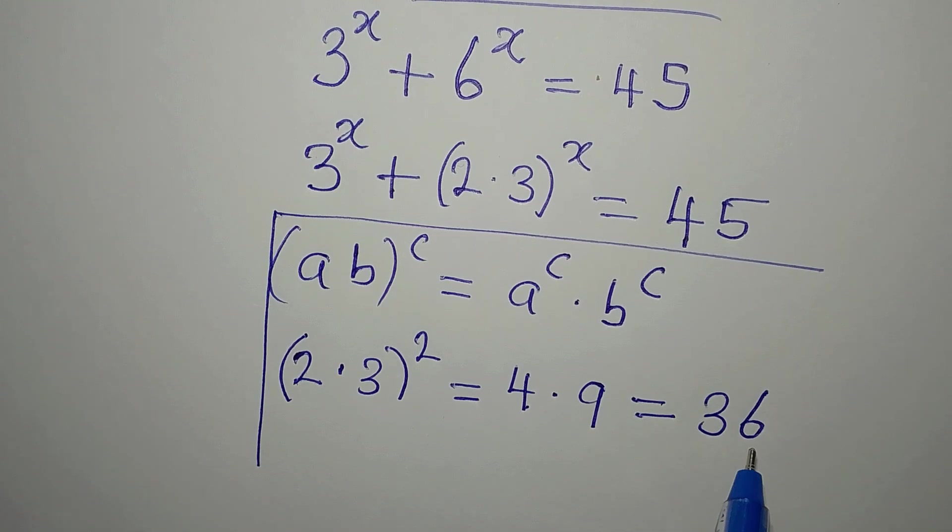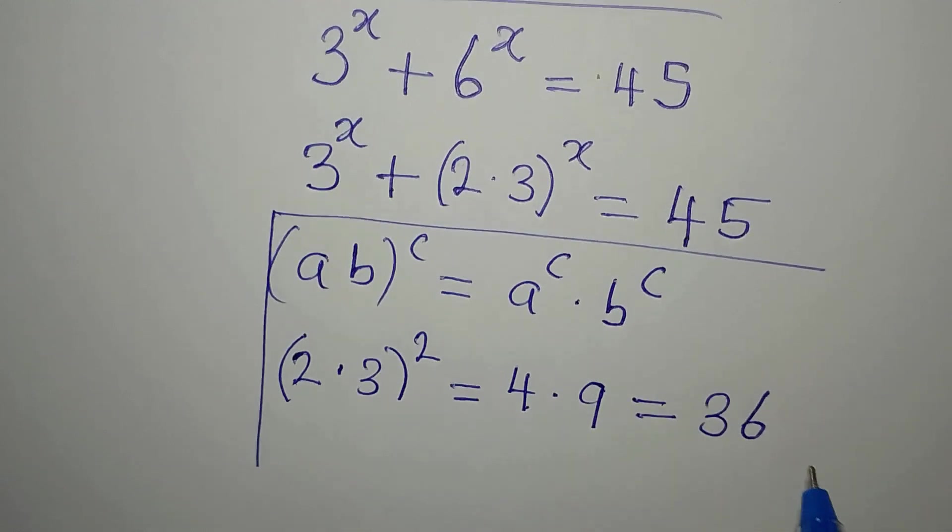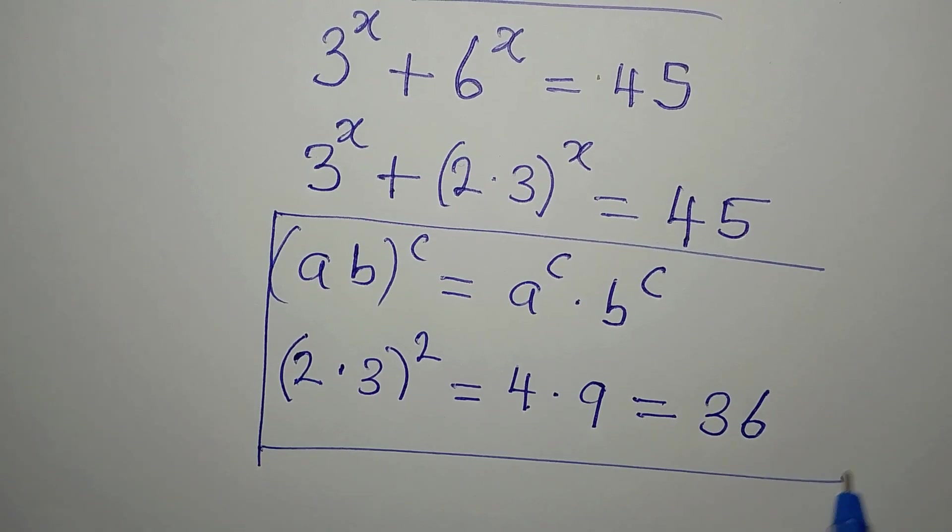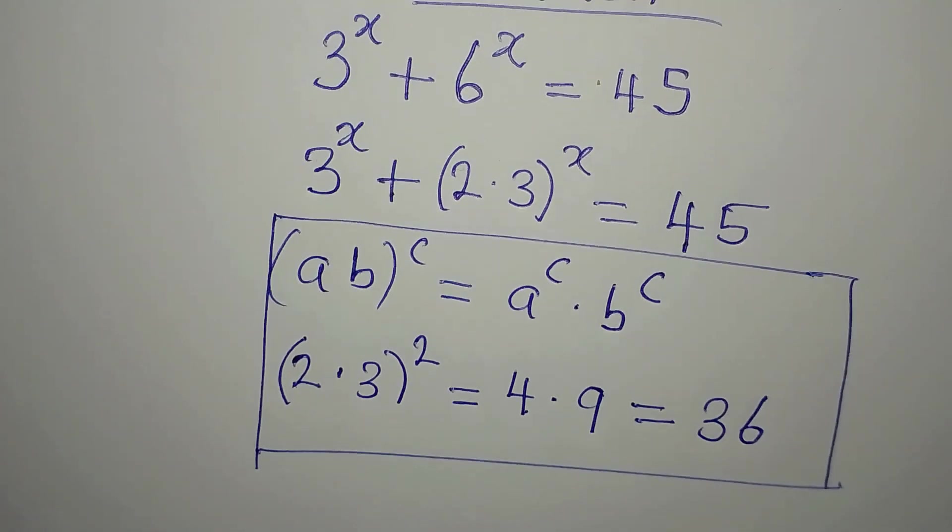Now, if I didn't want to do this, and I want to multiply this first, 2 times 3, that will be 6, 6 squared will give us 36. So this means that we are correct.